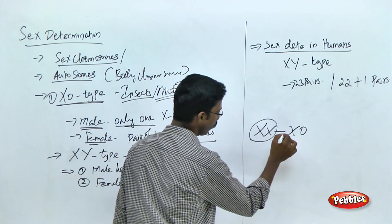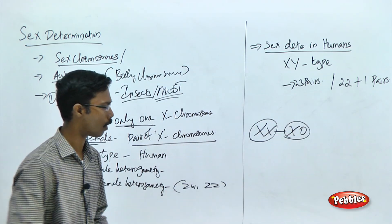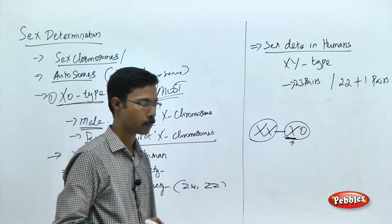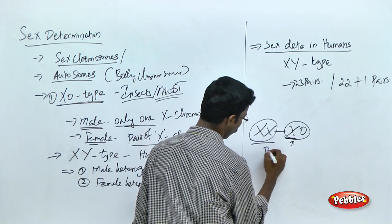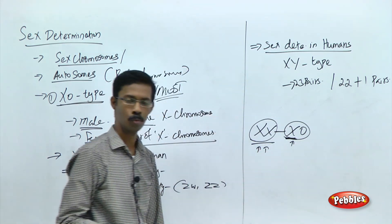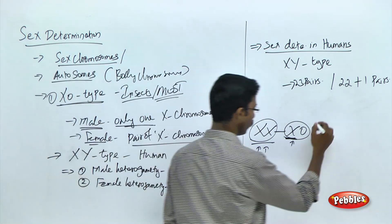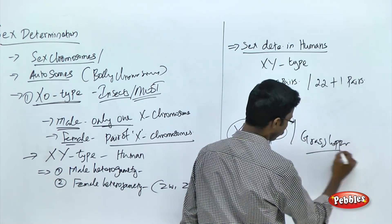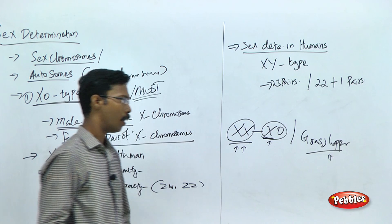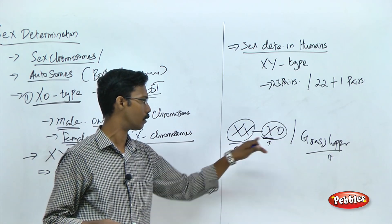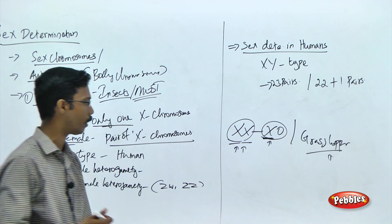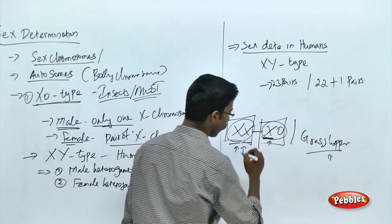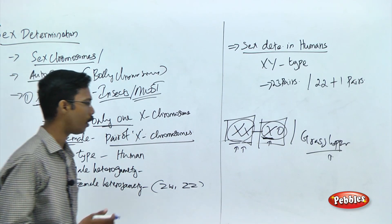In the XO type: female is XX and male is X0. In the case of male, a single X chromosome is present; in the female, two X chromosomes are present. This can be observed in most insects. The example given in the syllabus is the grasshopper. In the grasshopper, the female has two X chromosomes and the male has a single X chromosome.